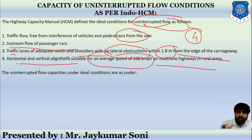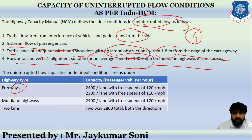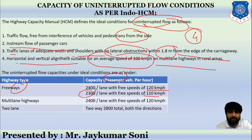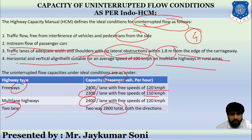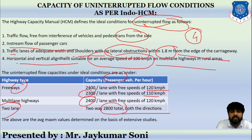The uninterrupted flow capacities under ideal conditions as per the Indo HCM model are as follows: for a freeway type highway, capacity is 2400 passenger vehicles per hour per lane at a free speed of 120 km/h, or 2300 at 110 km/h. For a multilane highway the capacity is 2400, and for a two-lane highway the capacity is 2800 total in both directions. These are average maximum values determined from extensive studies.